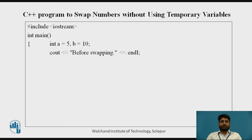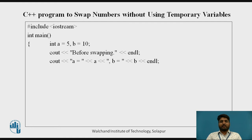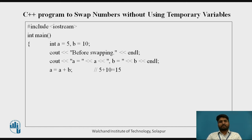Cout before swapping, cout a equal to — we call a value, b equal to — we call b value — that comes to a equal to 5 and b equal to 10. The logic here is: a value is equal to a plus b. I have written a comment here — that is 5 plus 10 — where a value is 5, b value is 10, you get value 15. So the new a value is 15.